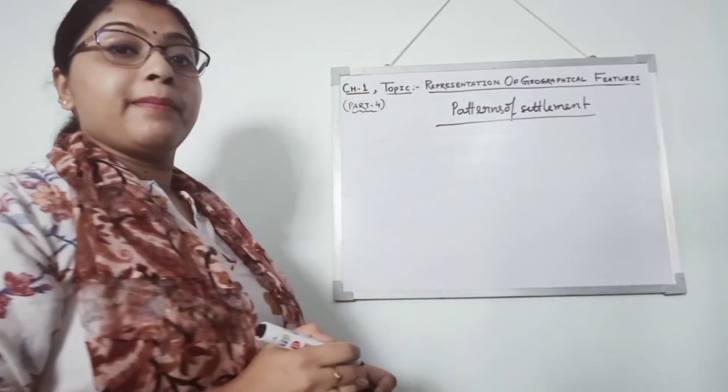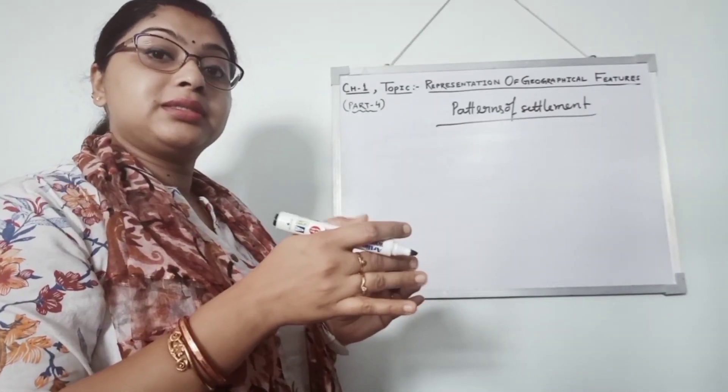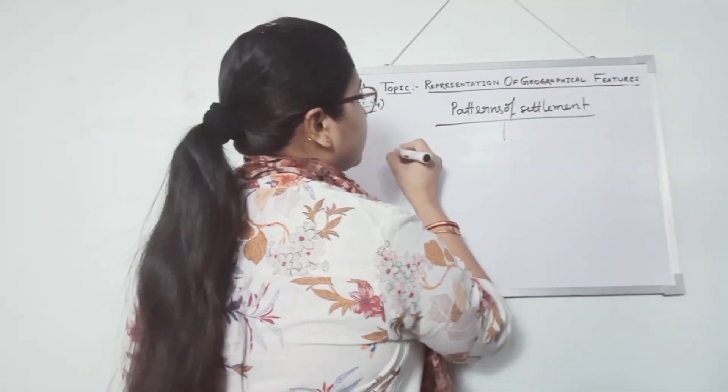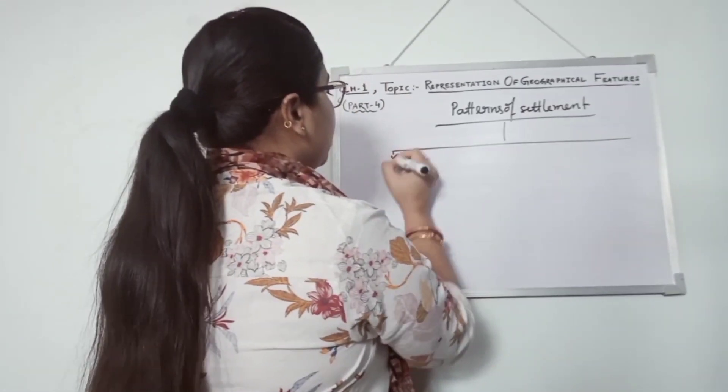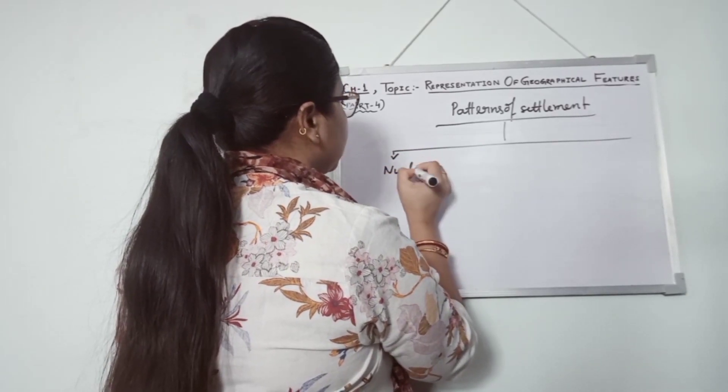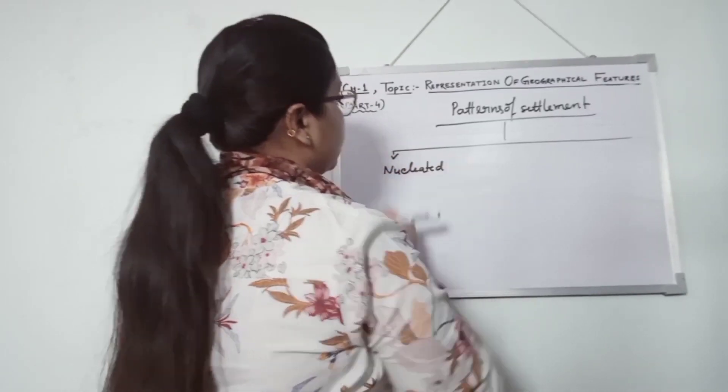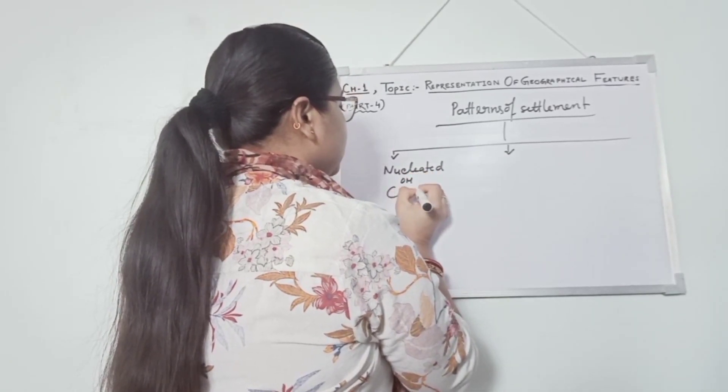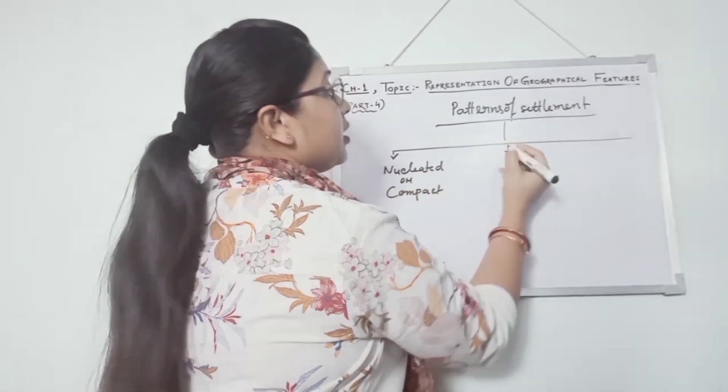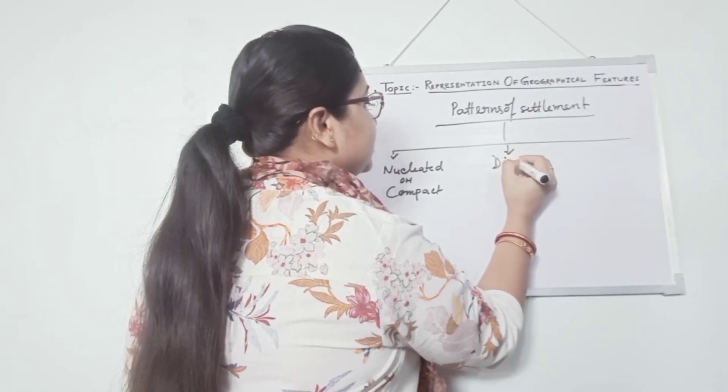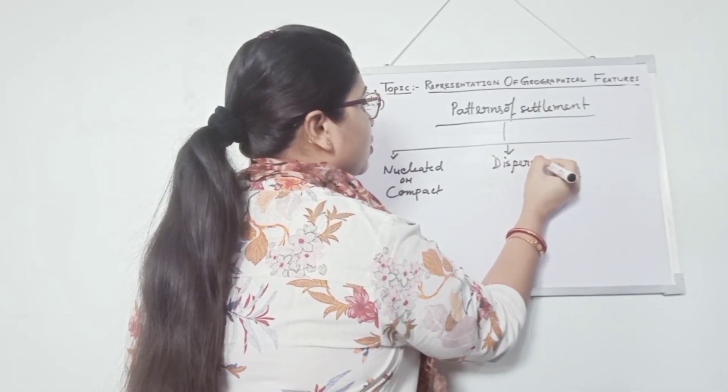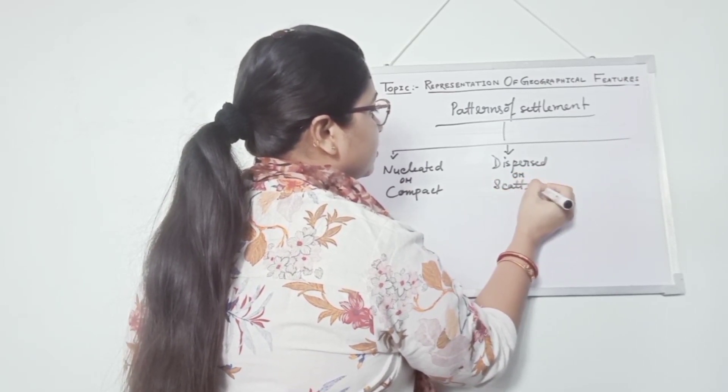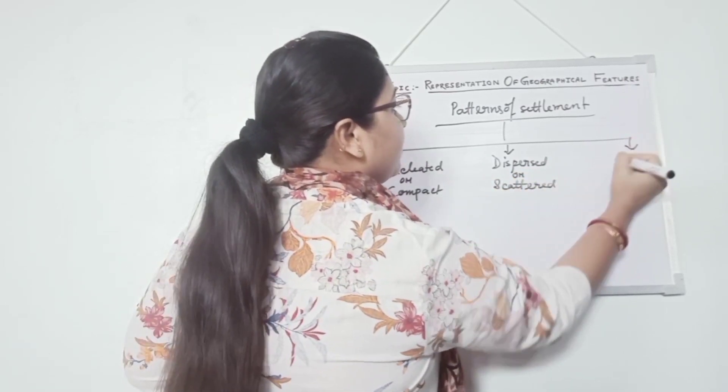Here these patterns divided in main three categories. First, nucleated or compact. Number two is dispersed or scattered. Number three is linear.